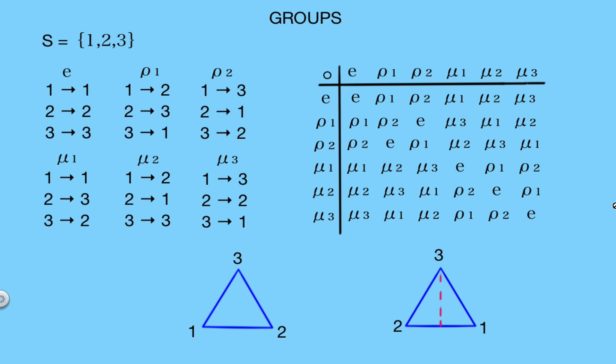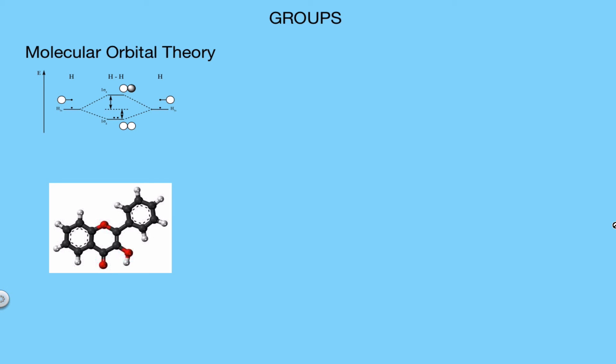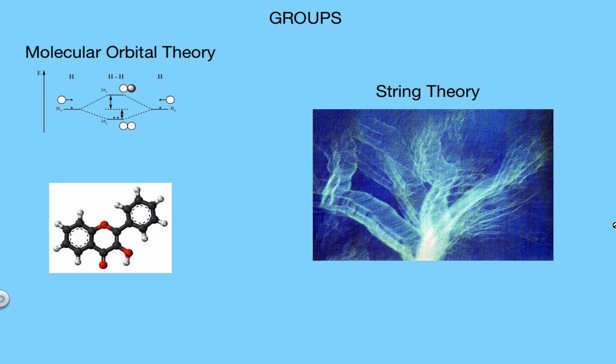So everything we talked about regarding the group of permutations can be applied to the group of symmetries of a triangle. And this idea of finding symmetries and looking for patterns is a big part of group theory, and probably the most natural part of group theory. Not only are groups found in symmetries of different shapes, but they are also used to describe the permutations of roots of polynomials, they are present in the study of molecules, specifically in molecular orbital theory, and they are even used in the study of string theory. So the applications of group theory are really endless, and it really is a great subject to study.